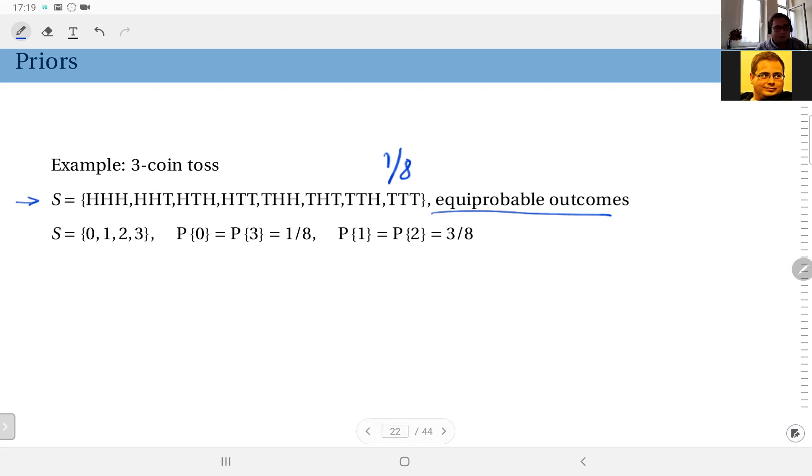But as we have talked about earlier, the sample space can also be defined in this way. Counting the number of, let's say, heads. It could also apply to number of tails. So it could be 0, 1, 2, or 3.